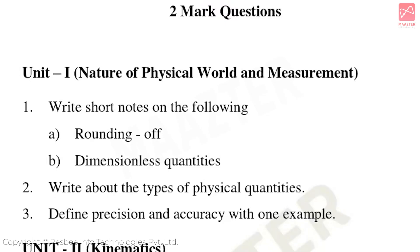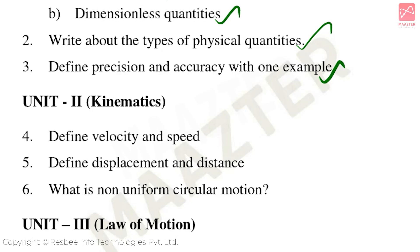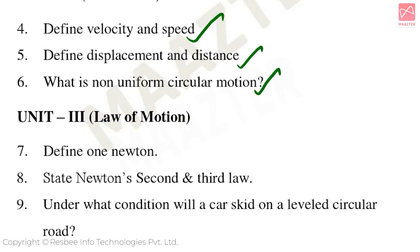Important two-mark questions: Write short notes on Rounding of Dimensionless Quantities. Write about the types of physical quantities. Define Precision and Accuracy with one example. Unit 2 Kinematics: Define Velocity and Speed, Define Displacement and Distance, What is Non-Uniform Circular Motion? Unit 3 Law of Motion: Define 1 Newton, State Newton's Second and Third Law, Under what condition will a car skip on a leveled circular road?